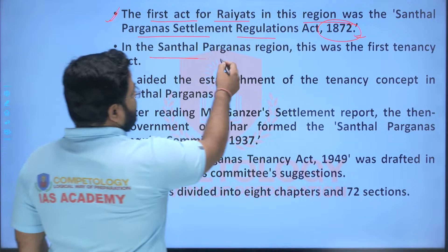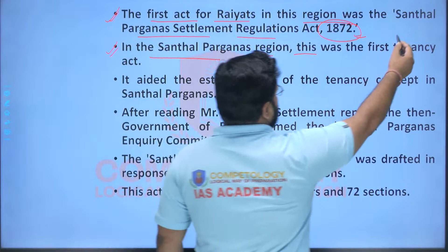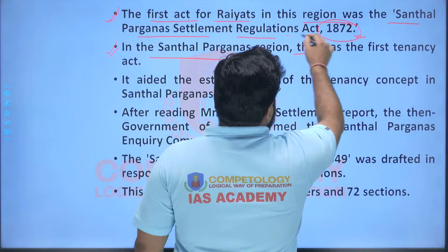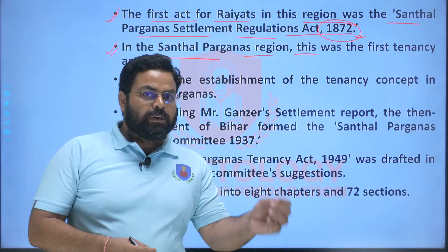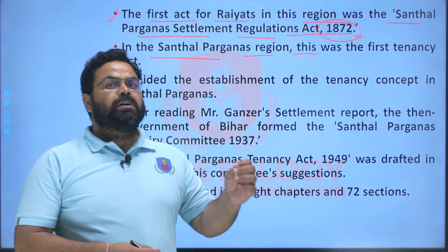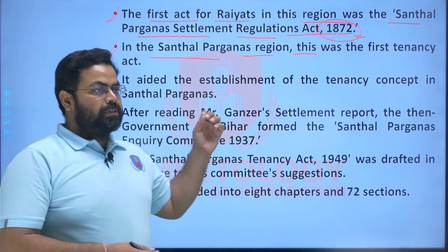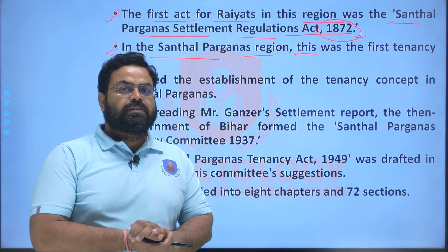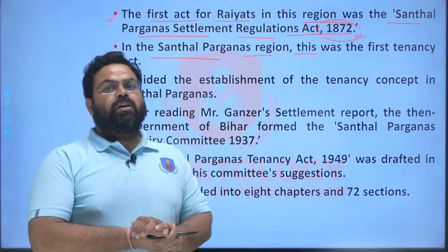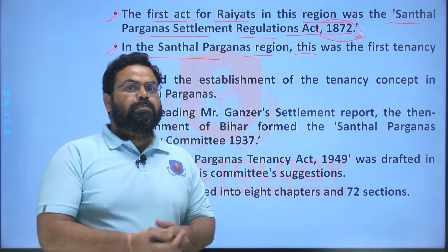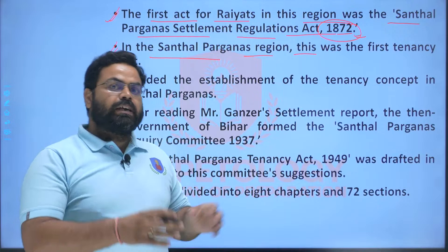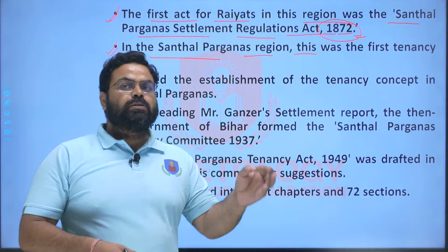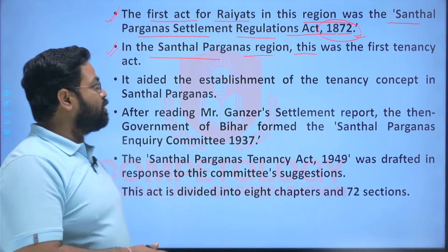In the Santhal Pargana region, the first Tenancy Act was the Santhal Pargana Settlement Regulation Act. In this act it was provided that those people whose land had been confiscated and not yet auctioned to anybody else — still held by the British administration — and if those tribal people could prove beyond reasonable doubt that they were the owners, they would get their land back. However, most tribal people did not have land records, and many would not testify for each other, so only 30 to 35% of tribal people were able to get back their land, and the land-related discontent stayed, leading to further revolts.